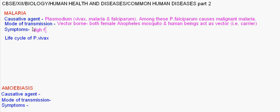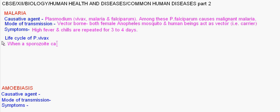The symptoms are high fever and chills, which are repeated for three to four days. Coming to the life cycle of Plasmodium vivax: Plasmodium has two vectors — one is human beings, another is the Anopheles mosquito. When a sporozoite-carrying infected mosquito bites a human being,